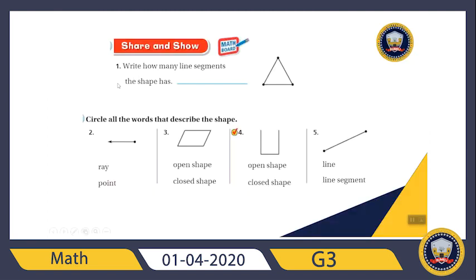It says how many line segments the shape has. This triangle — how many line segments can you see? That's right, it is three. It is three line segments.